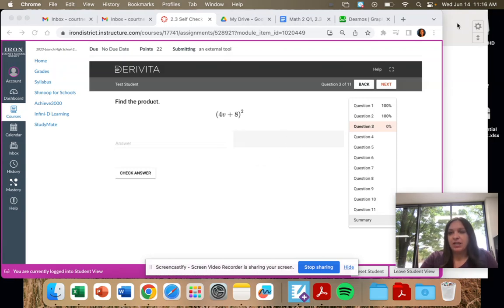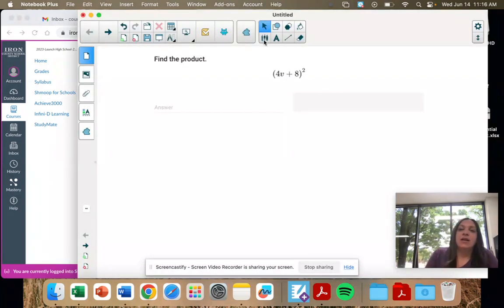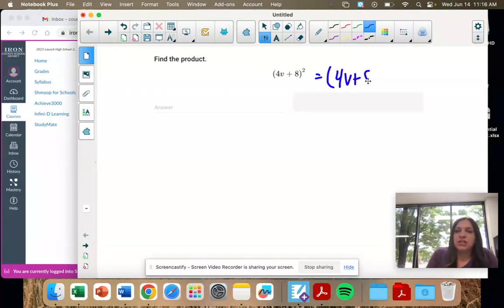So number three, we're finding the product and it's something squared. So it's 4V plus 8 times itself. You can distribute it out like we've done in the past.